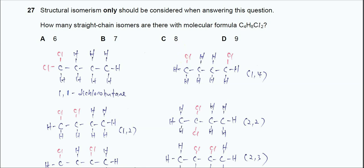Question 27. Structural isomerism only should be considered when answering this question. We are not going to consider optical isomers, cis-trans isomers, and so on. It must be a straight chain — no branches.